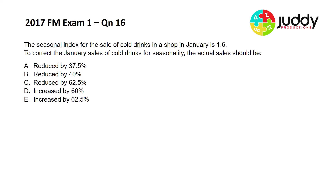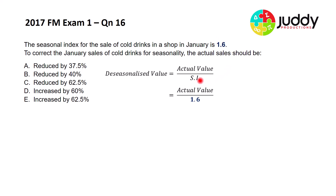The question states: the seasonal index for the sale of cold drinks in a shop in January is 1.6. To correct the January sales of cold drinks for seasonality, the actual sales should be — and then we have a range of either reduced by percentage or increased by percentage answers. Recall that de-seasonalized values are equal to the actual value divided by the seasonal index. We substitute 1.6 for the seasonal index, giving: de-seasonalized value equals actual value divided by 1.6.